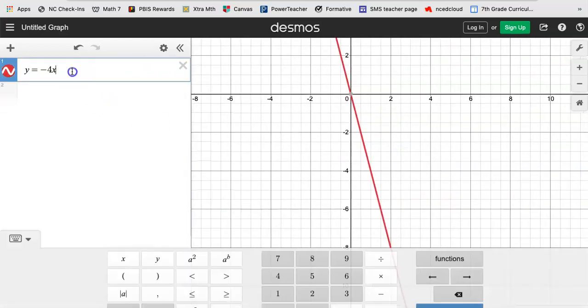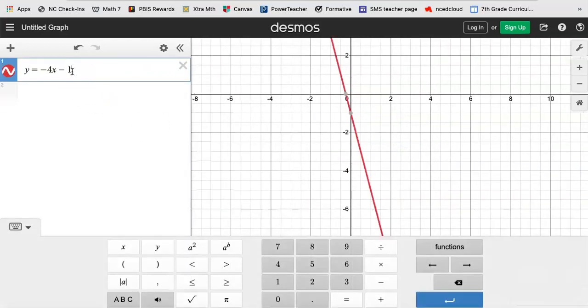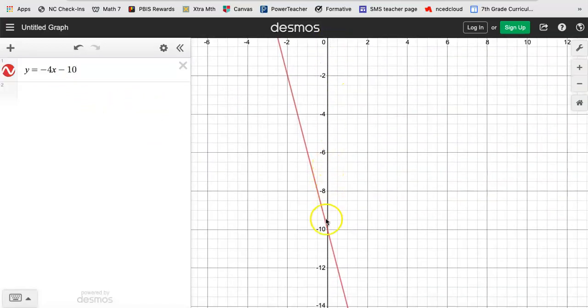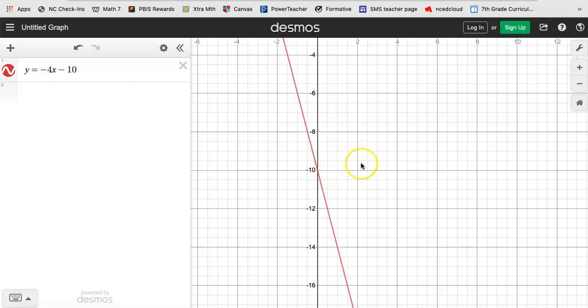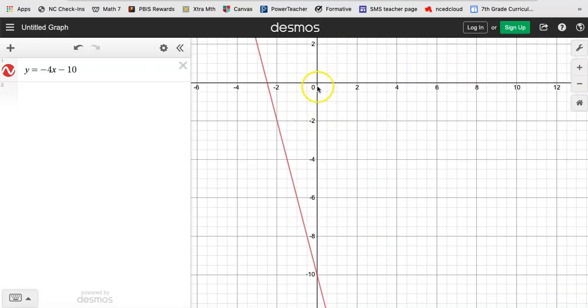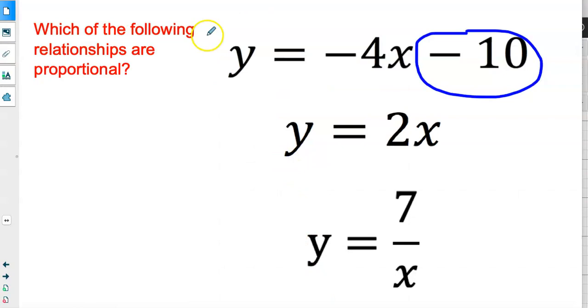But as soon as we subtract the 10, it moves down 10 and now it's going through (0, -10) instead of (0, 0). So this is not proportional because now, even though it's a straight line, it doesn't go through (0, 0). I'm going to put an X beside it.